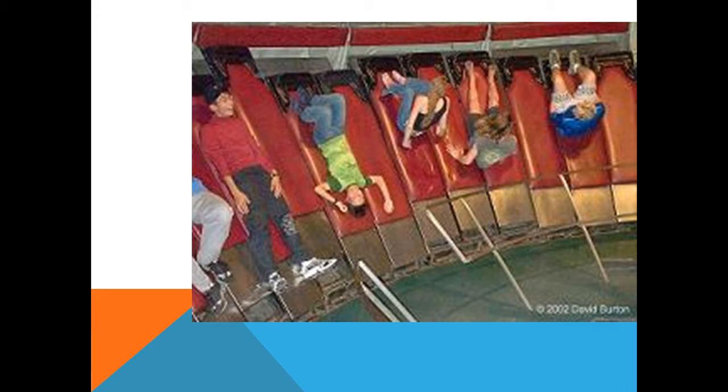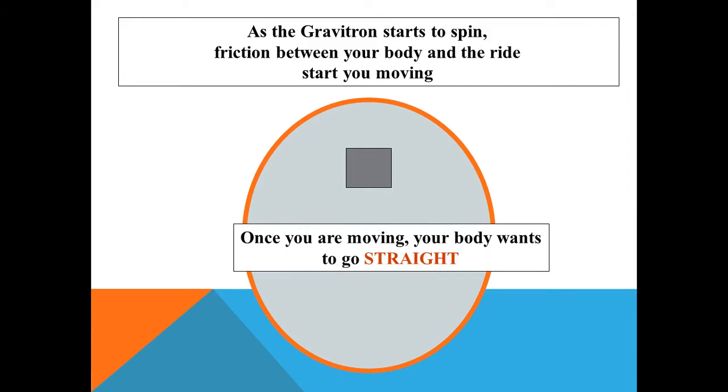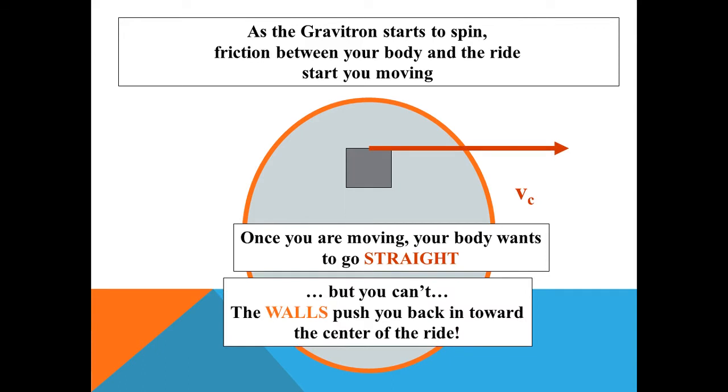Here is the reason: As the Gravitron starts to spin, friction between your body and the ride starts you moving. Once you are moving, your body wants to go straight, but you cannot. The walls push you back in towards the center of the ride.